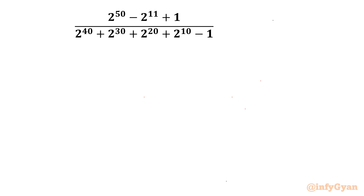Welcome back to Infigyan, my dear friends. Today in this video we have one very interesting question from Math Olympiads. We have to simplify one algebraic expression: 2 power 50 minus 2 power 11 plus 1, over 2 power 40 plus 2 power 30 plus 2 power 20 plus 2 power 10 minus 1.